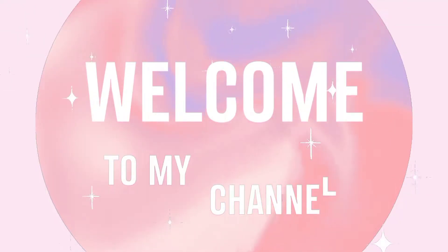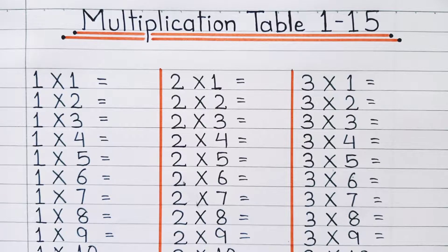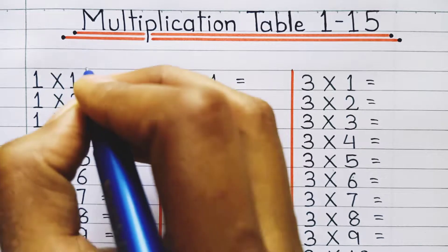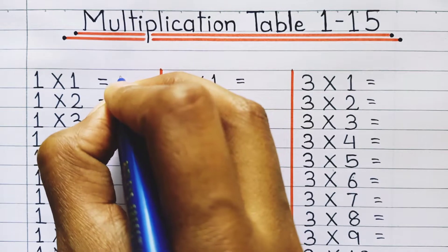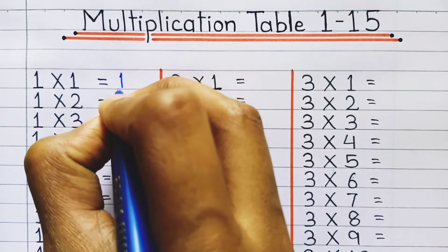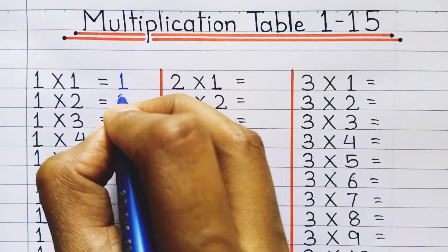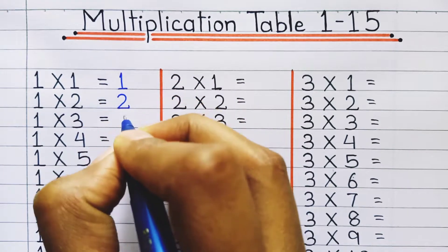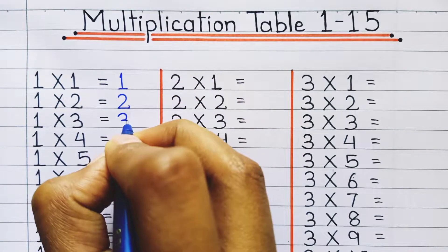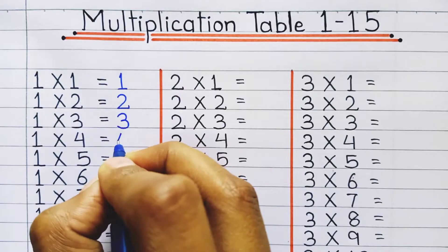Hello everyone, in this video we will learn tables 1 to 15. Table of 1: 1 one's a 1, 1 two's a 2.